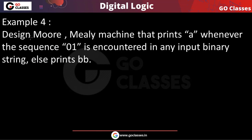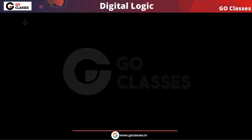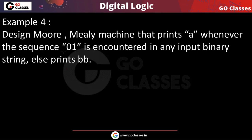Hi everyone, let's solve this question. Design a Mealy machine and Moore machine that prints A whenever the sequence 01 is encountered in a binary string, else prints B.